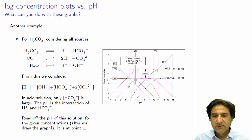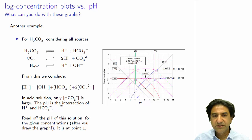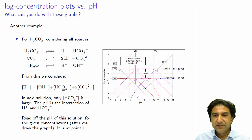Why does this work? At that intersection point, the concentration of HCO₃⁻ is about 10⁻⁵·⁸. The concentration of OH⁻ is about 10⁻⁸·⁵, which is quite a bit smaller than bicarbonate. And the concentration of CO₃²⁻ would be about 10⁻¹¹, many orders of magnitude smaller than OH⁻. So we can neglect OH⁻ and carbonate as negligible terms. We just look at the intersection of the H⁺ line and the HCO₃⁻ line to get the pH of the solution.